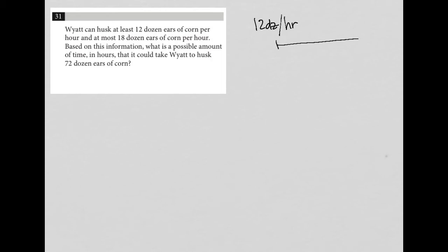And that's the minimum. So on the scale, that's the minimum. At most, 18 dozen. So at the highest end, we're going to get to 18 dozen per hour. Based on this information, what is a possible amount of time in hours that it could take Wyatt to husk 72 dozen ears of corn?